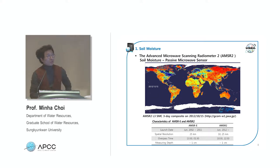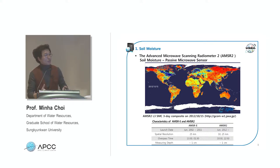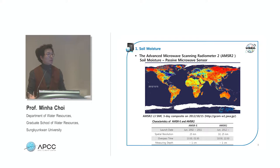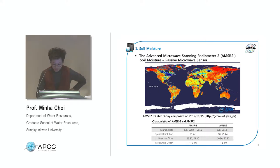Twenty years ago, we couldn't imagine having a global-scale soil moisture map. But now many applications can utilize this data for climate models. Some areas are very dry and some very wet, and this information is very important for crop production, agriculture, ecology, and climate science. The global soil moisture map for 2012 shows red points indicating dry areas and blue points indicating wet and moderately wet portions.